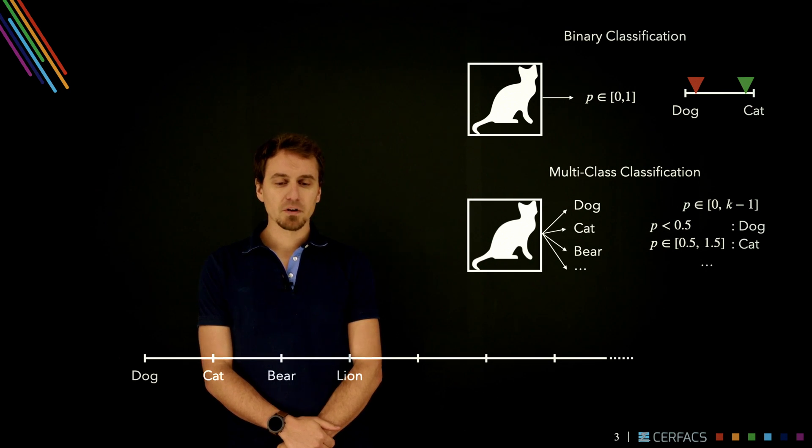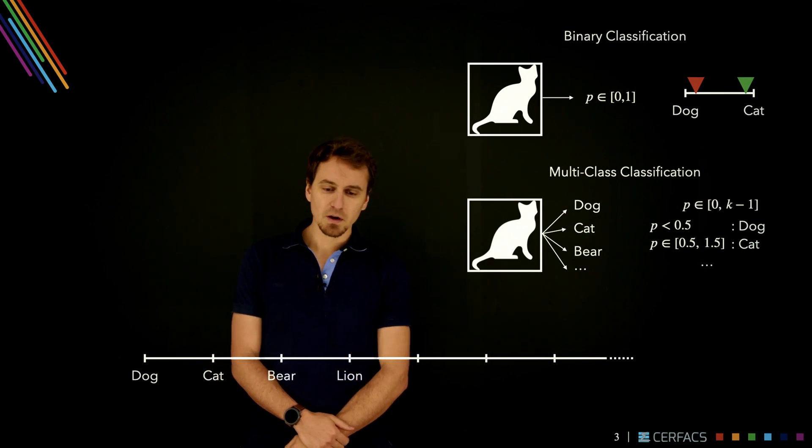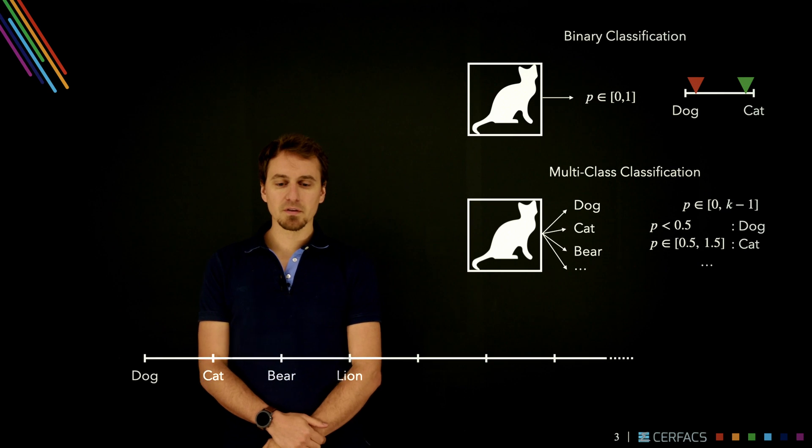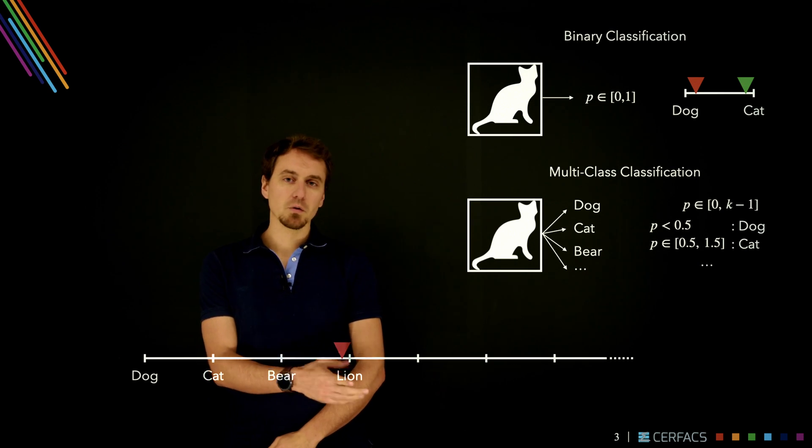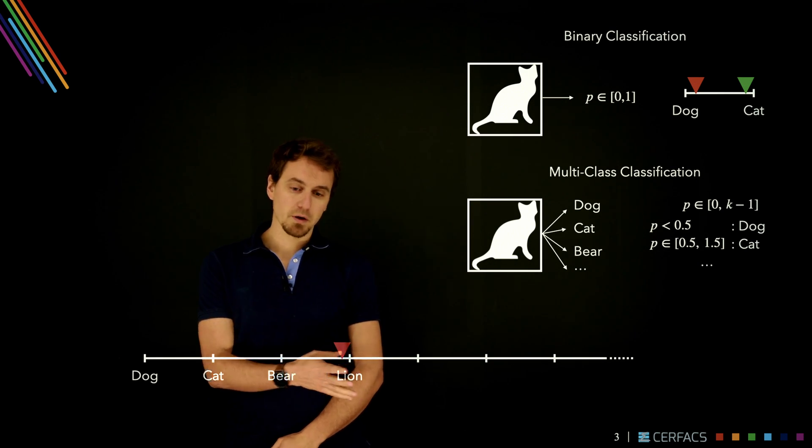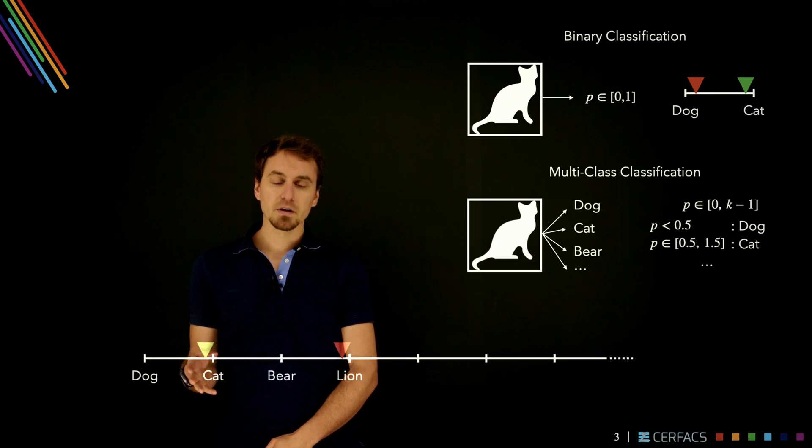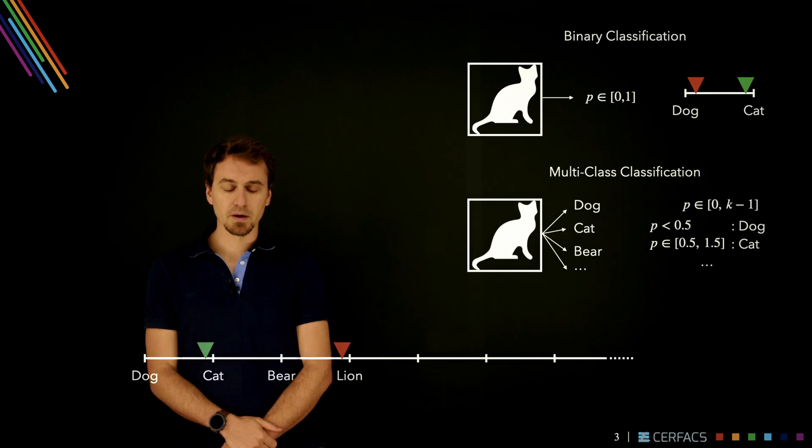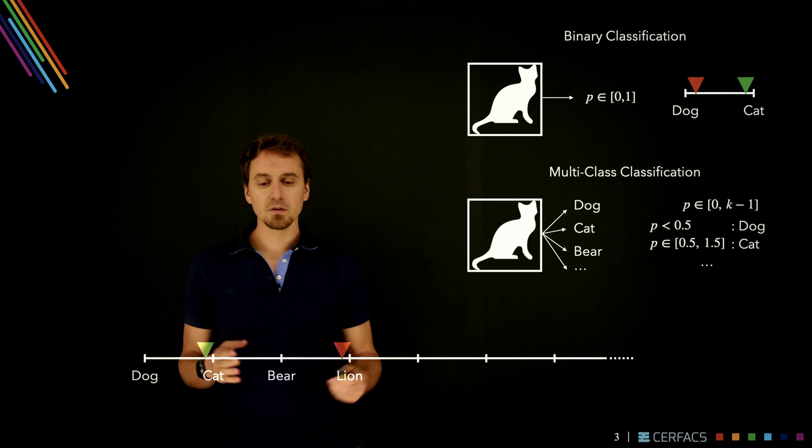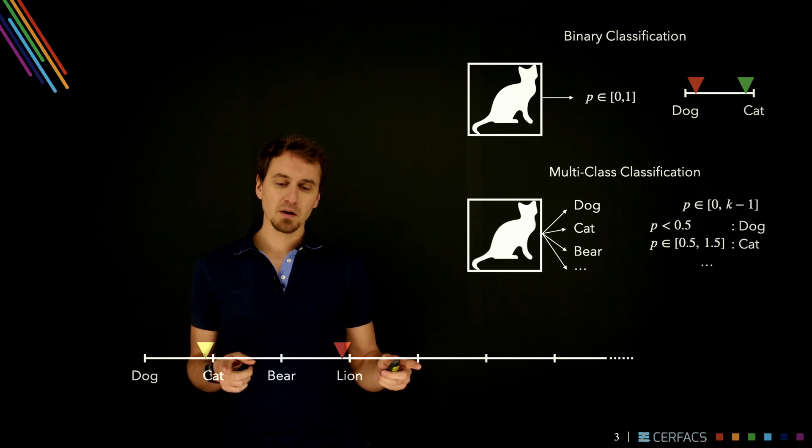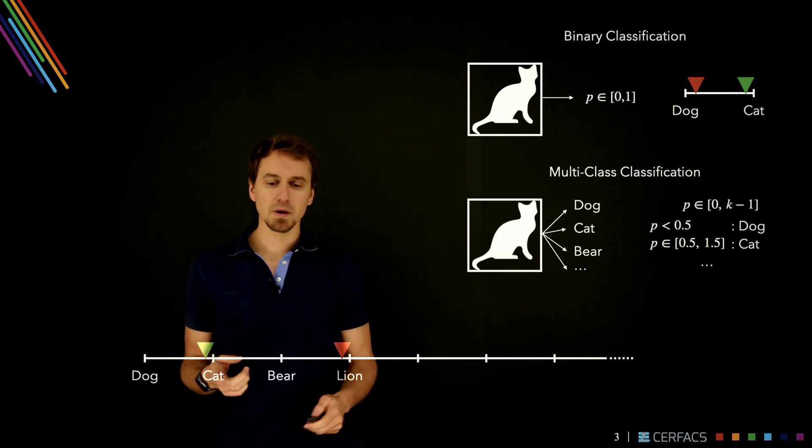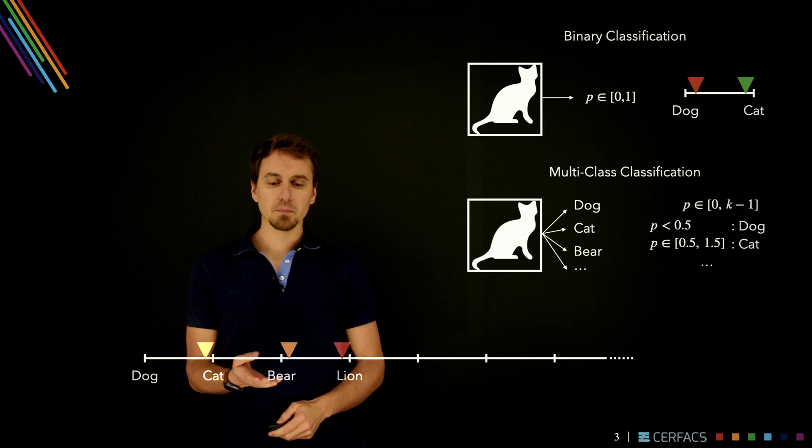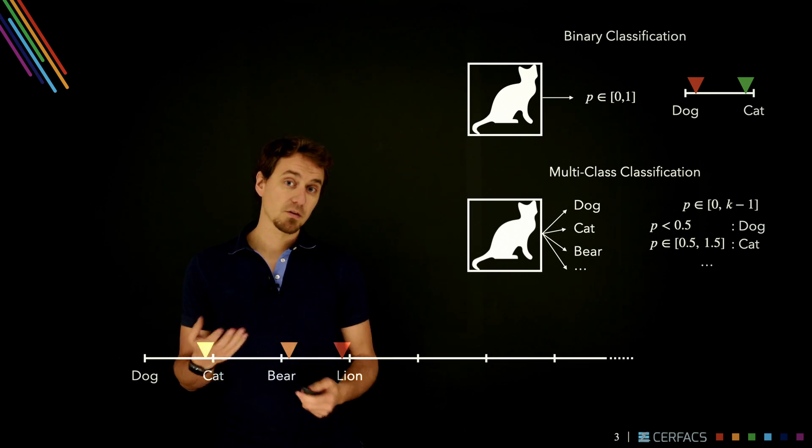Now this is interesting, but it's not very well suited as we're going to see. If you predict for this image something around here, you will say it's false. And if you predict something near cat, you will say that's good, it's correct. But the notion of distance between these two is not very representative of the errors you're making. For example, if I were to predict bear instead of cat, that's also wrong.